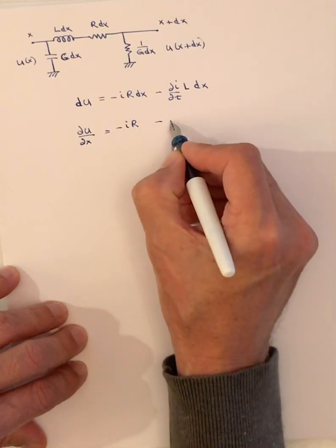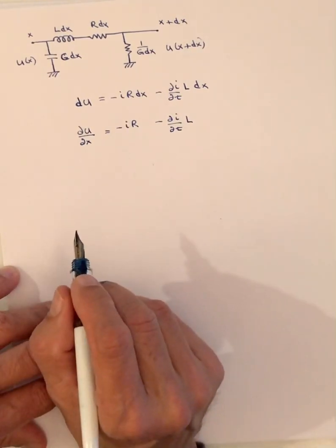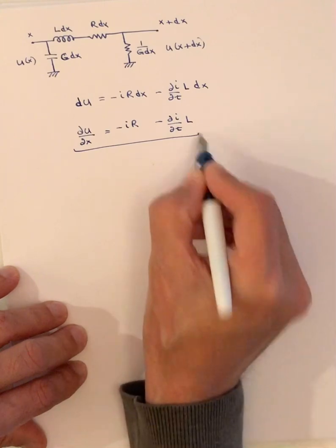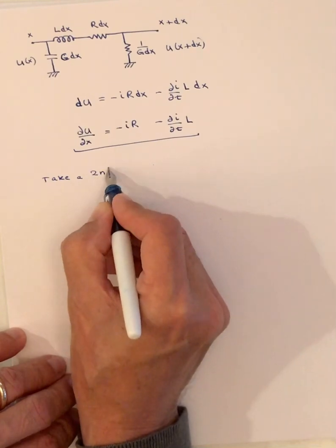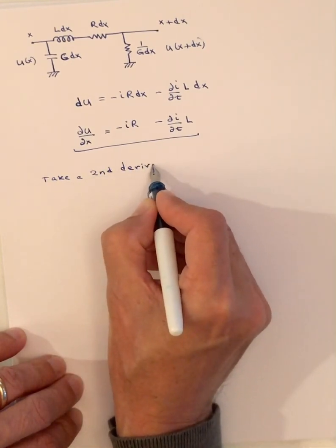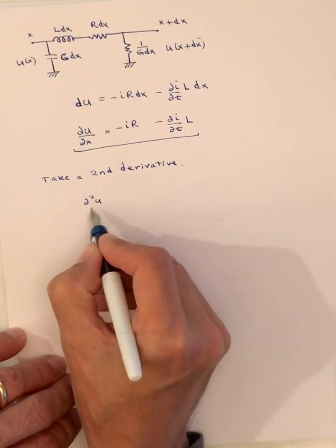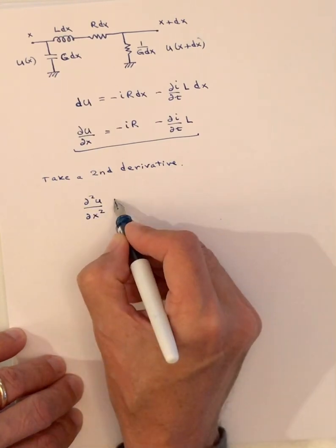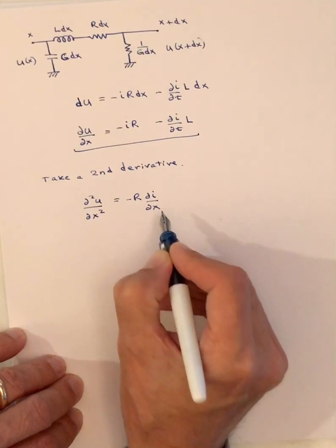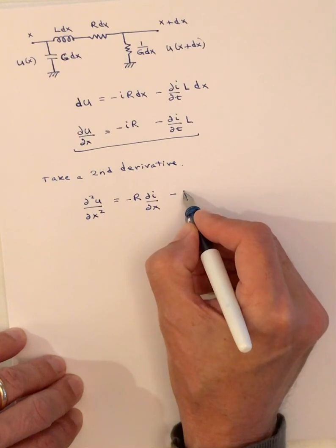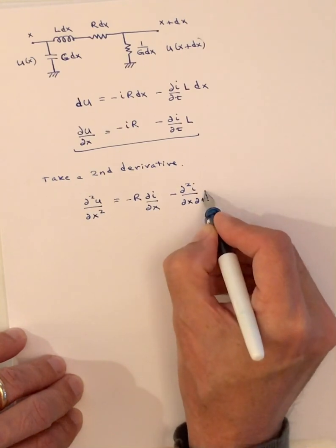The DX cancels out, giving us our first partial differential equation. Taking the second derivative of both sides, we end up with D²U/DX² equals minus R·(DI/DX) minus L·(D²I/DX·Dt).